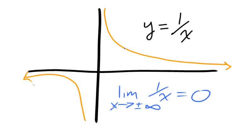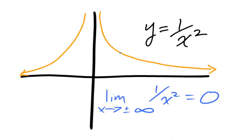This definition allows us to describe the end behavior of many functions. Certain functions have finite limits at infinity — take 1 over x, whose limit at positive or negative infinity is 0, or 1 over x squared, whose limit at positive or negative infinity is also 0.